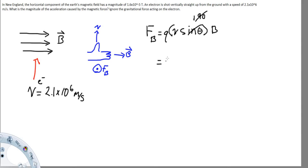So we know that the charge of an electron is 1.6 times 10 to the negative 19 coulombs.